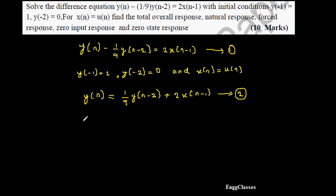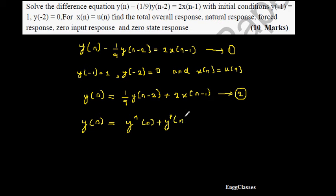The total response y[n] is the sum of the natural response y_n[n] plus the particular solution y_p[n], where y_n[n] represents the natural response and y_p[n] represents the particular solution. The next step is to find the characteristic equation.